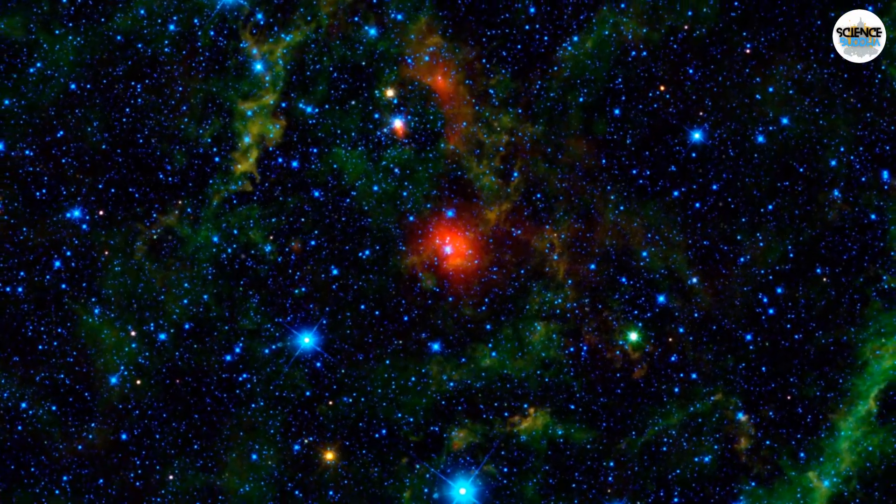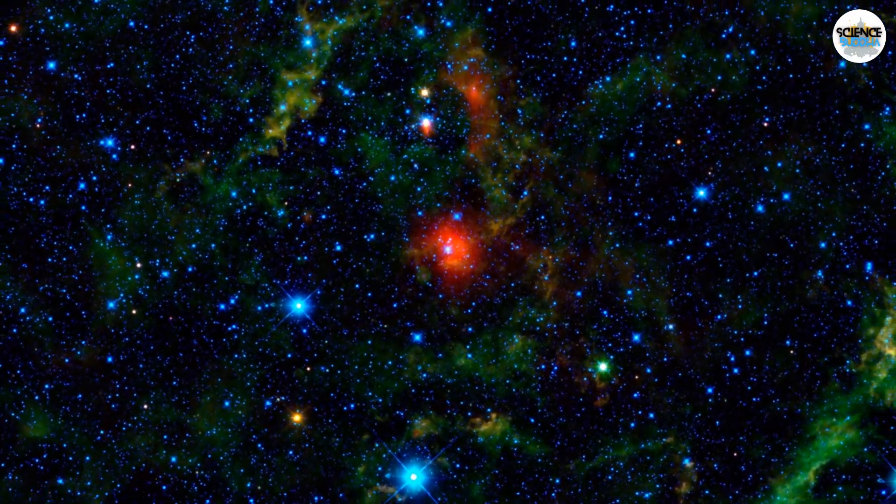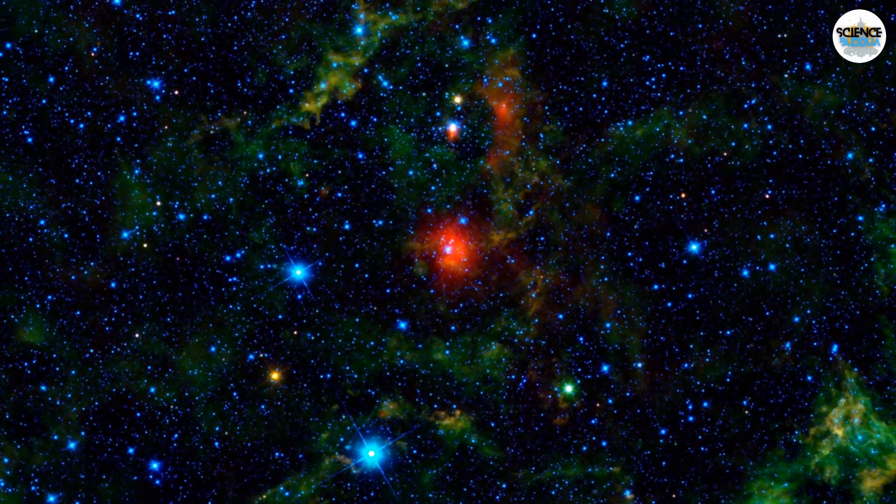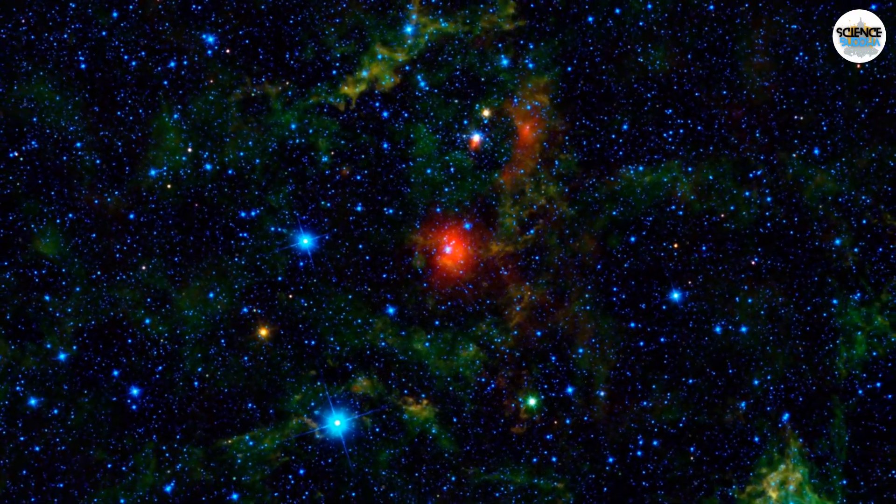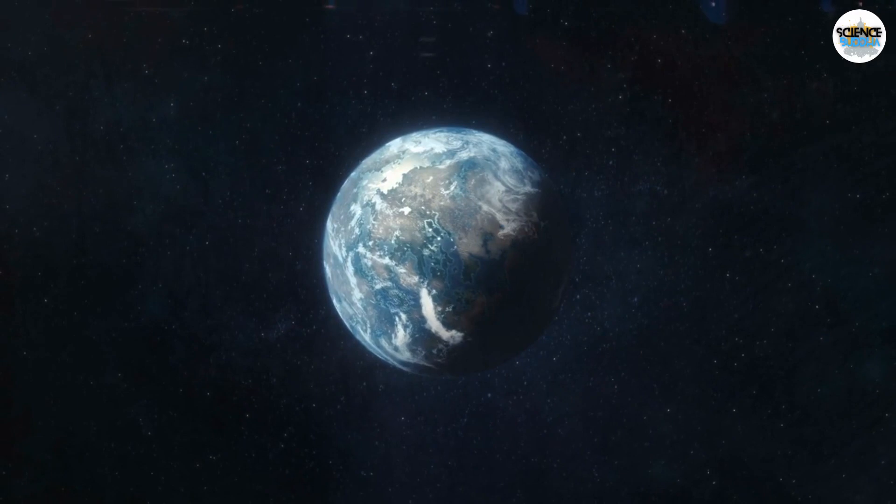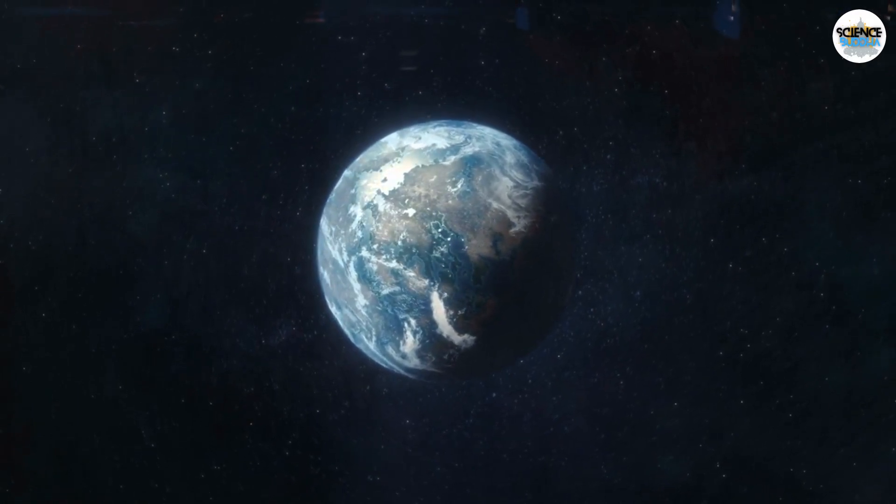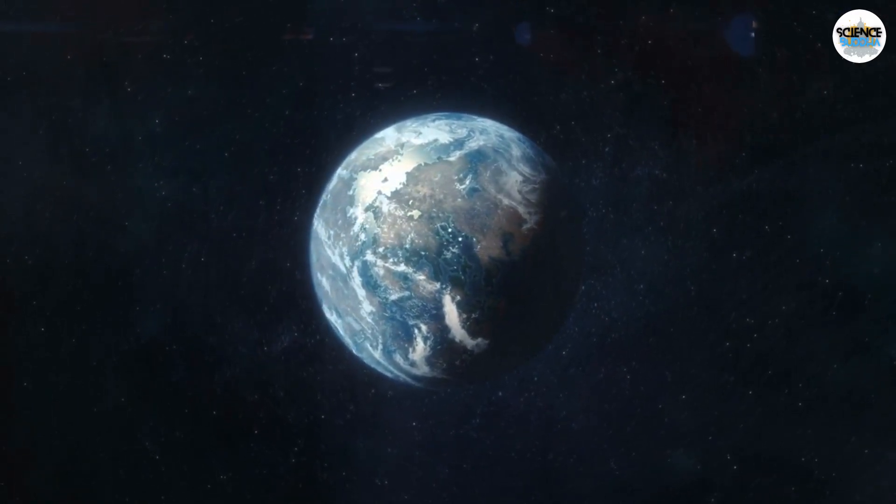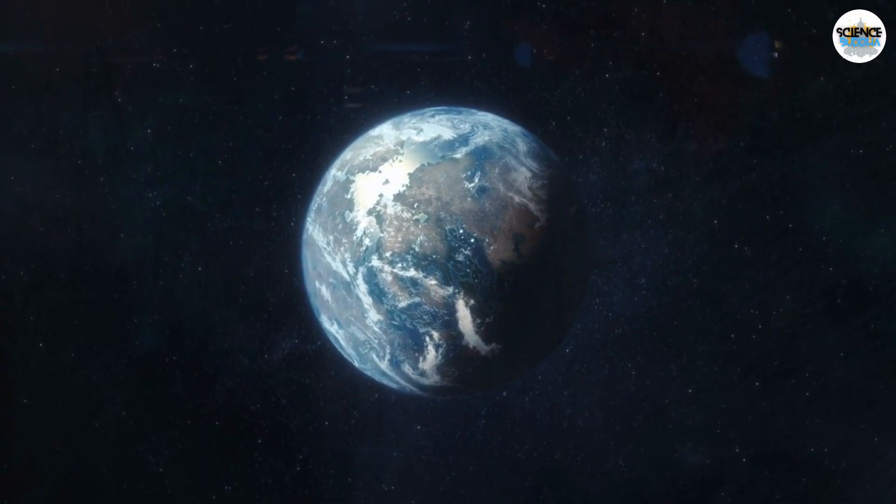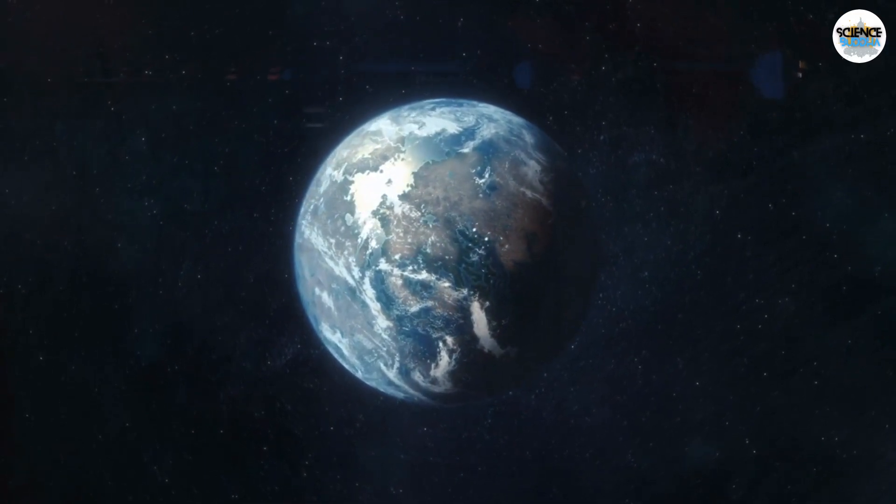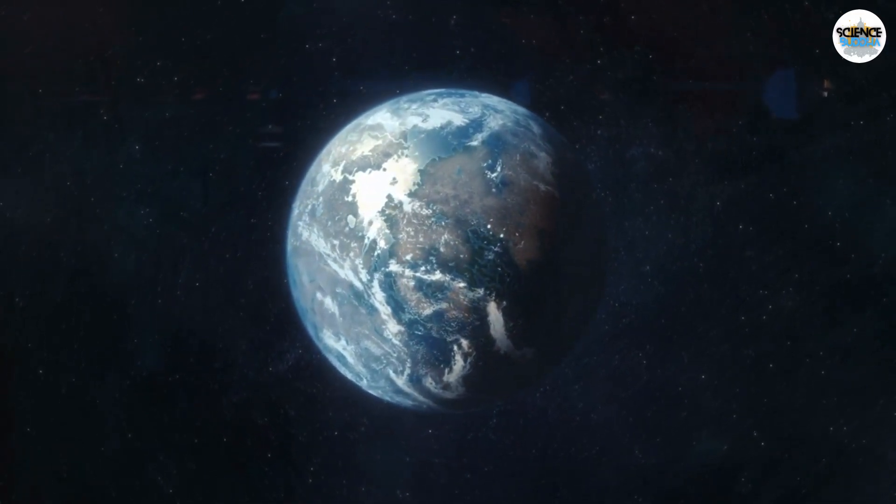This water vapor is nestled right within the inner disk of the PDS-70 system, mere cosmic footsteps away from the star itself. Imagine less than 100 million miles. That's practically next door in astronomical terms. We're talking about the region where rocky, Earth-like planets might be forging their path to existence.